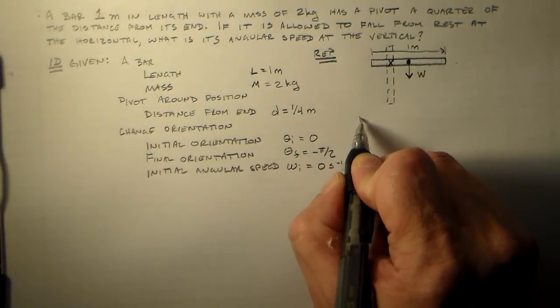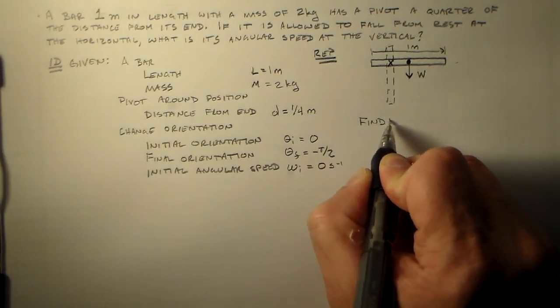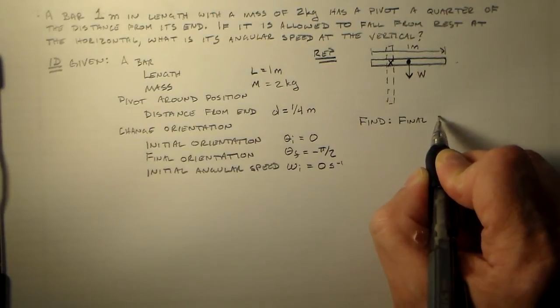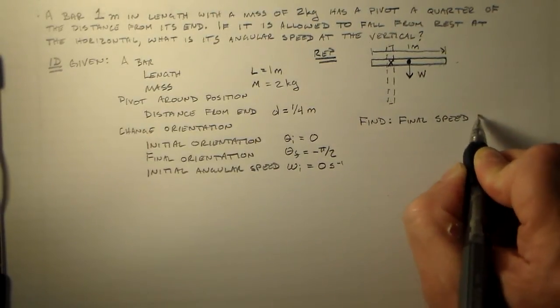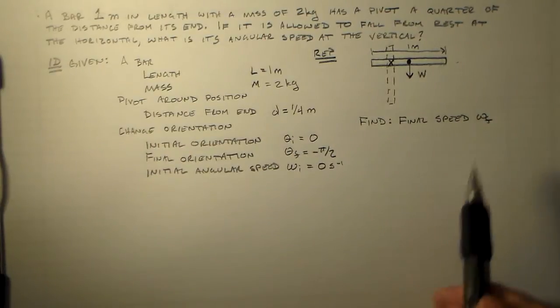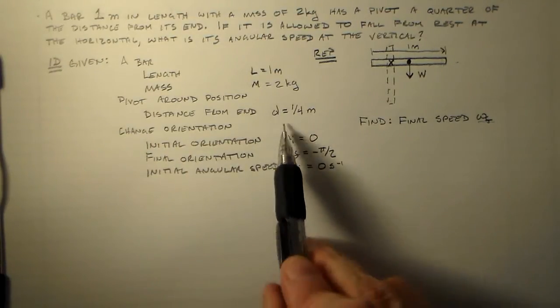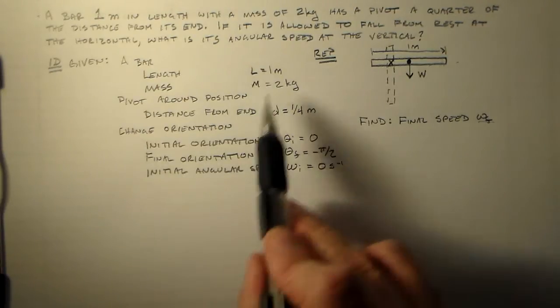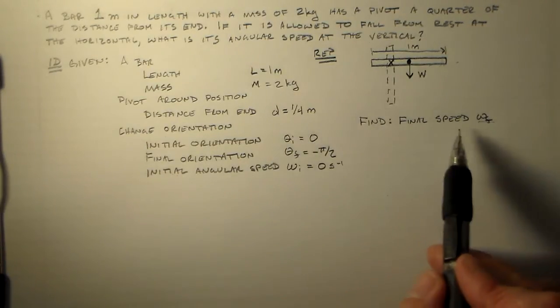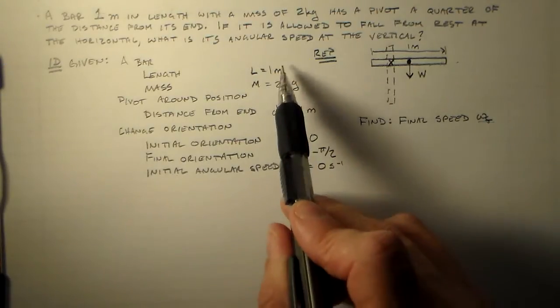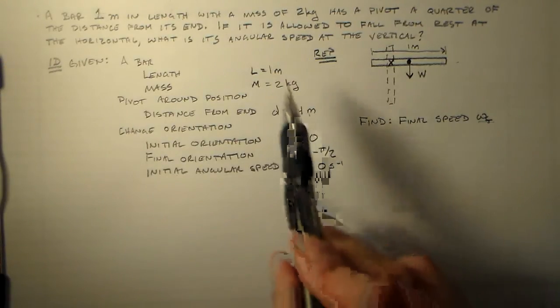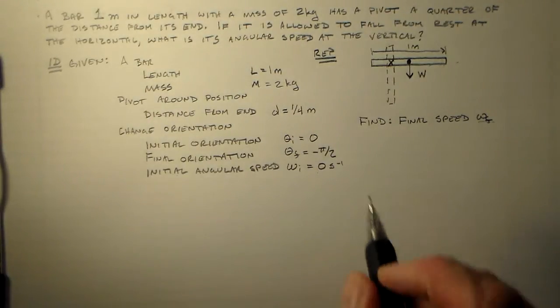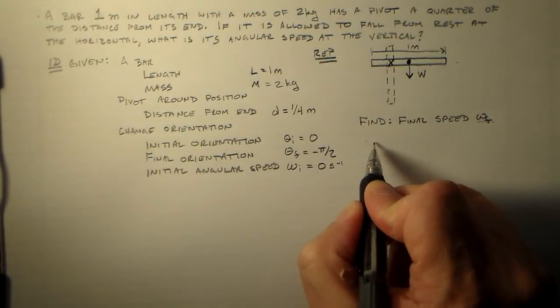I'll write the find here. Find its final angular speed, omega_f. Remember you need to name each thing in both words and symbols, and give the values if you know them.